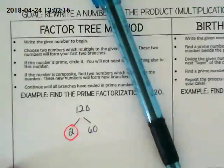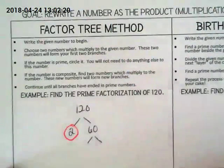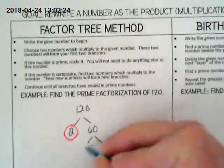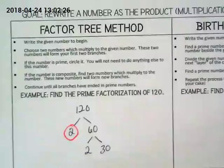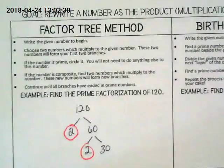The branch stops growing when we're at a prime. And so I'm going to go to 60 because it's not done. Give me two numbers that can be... Two and thirty. Sure. And I have another branch that's ended. What about 30? Two and fifteen.